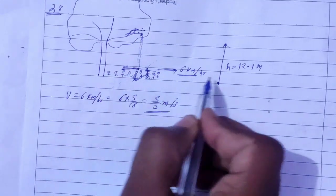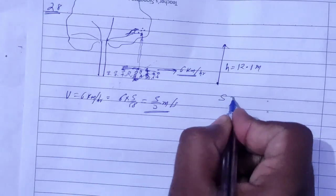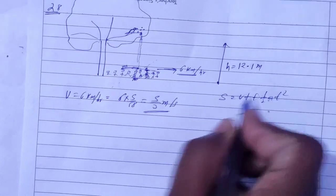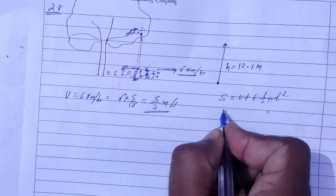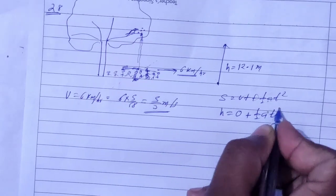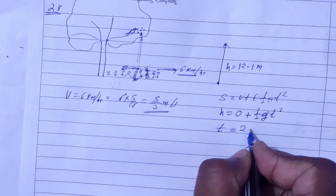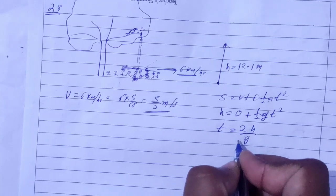To find how much time the berry takes to get down, we use the second equation: s is equal to ut plus half at square. The berry starts at zero speed, so h is equal to 0 plus half a t square, where a equals g. Therefore, t equals root of 2h by g.